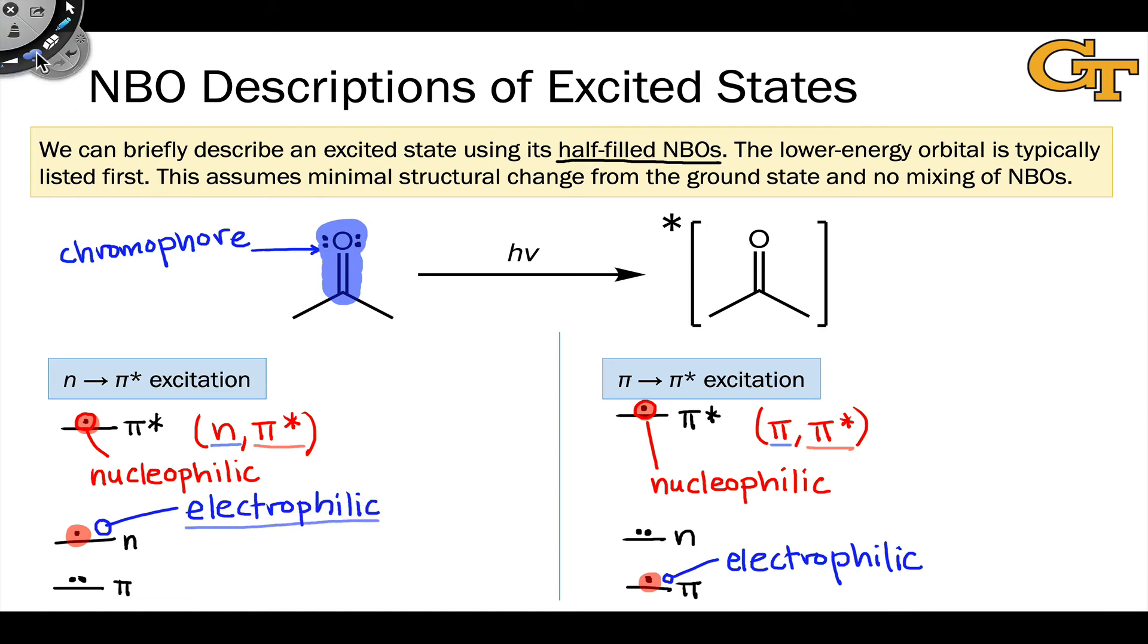So keep this in mind: there's actually some built-in information in these labels in terms of the nucleophilic and electrophilic orbitals in the excited state. That's easy enough to derive just by drawing out these orbital energy diagrams and thinking through the electron configuration and the relative energies of electrons in each excited state. Of course, I have to give a caveat here.